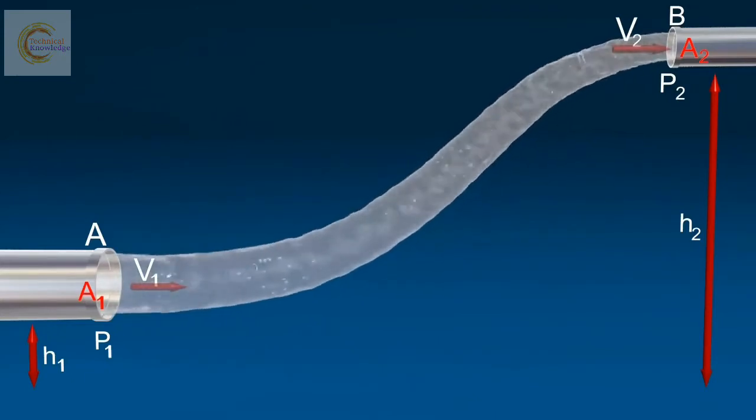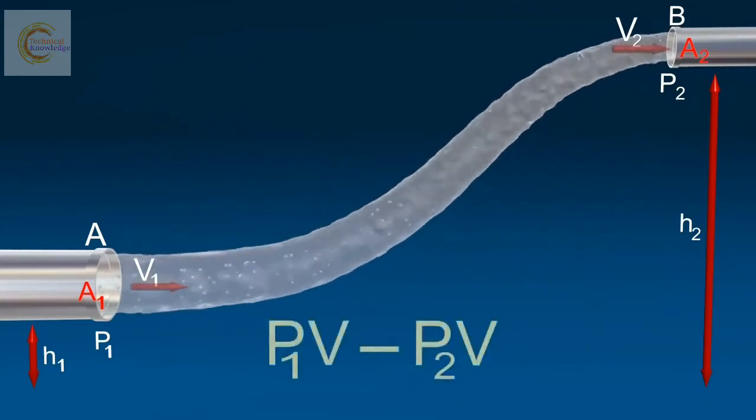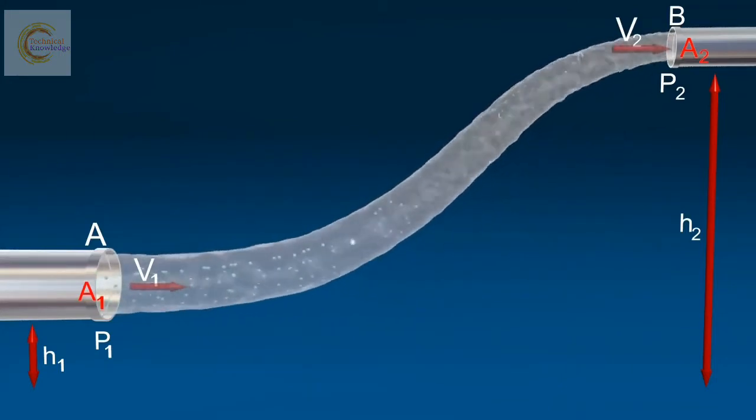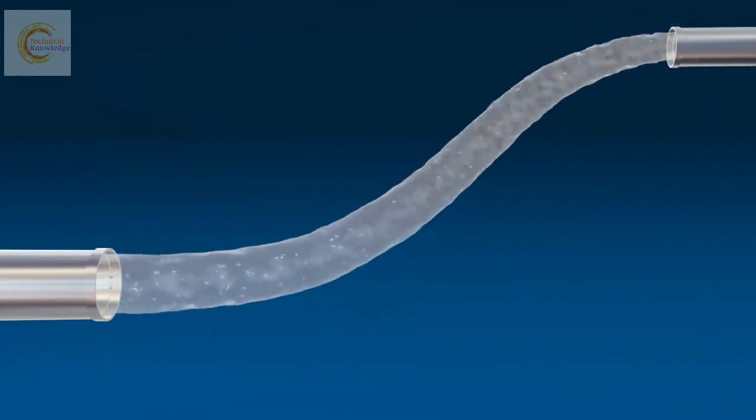Network done equals P1V minus P2V. The network done per second equals the increase in potential energy and kinetic energy per second from A to B, according to the law of conservation of energy.